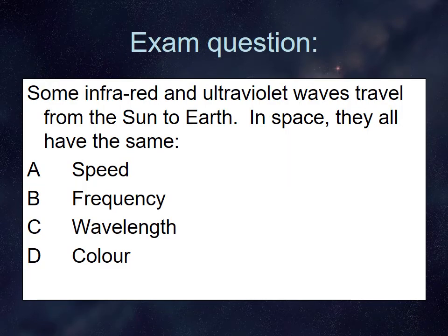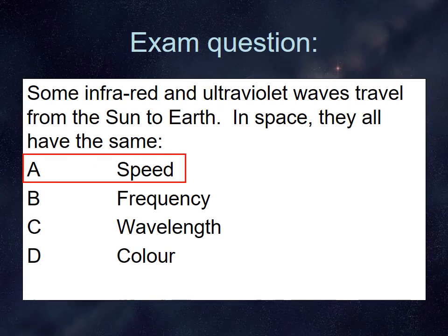Here's an exam question: some infrared and ultraviolet waves travel from the sun to the earth — in space, they all have the same... pause and try to answer. The answer is they have the same speed — the speed of light.